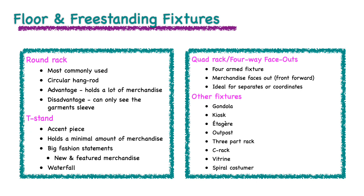The three-part rack is a round rack made up of three separate but equal arcs. It's best for showing separates, coordinates, or assorted colors and styles of a particular item. The C rack is a round rack that is split in half, creating the C shape. Like the round rack, it can hold a large volume of merchandise such as dresses, coats, suits, and separates. Two C racks can be put together to form an S rack.